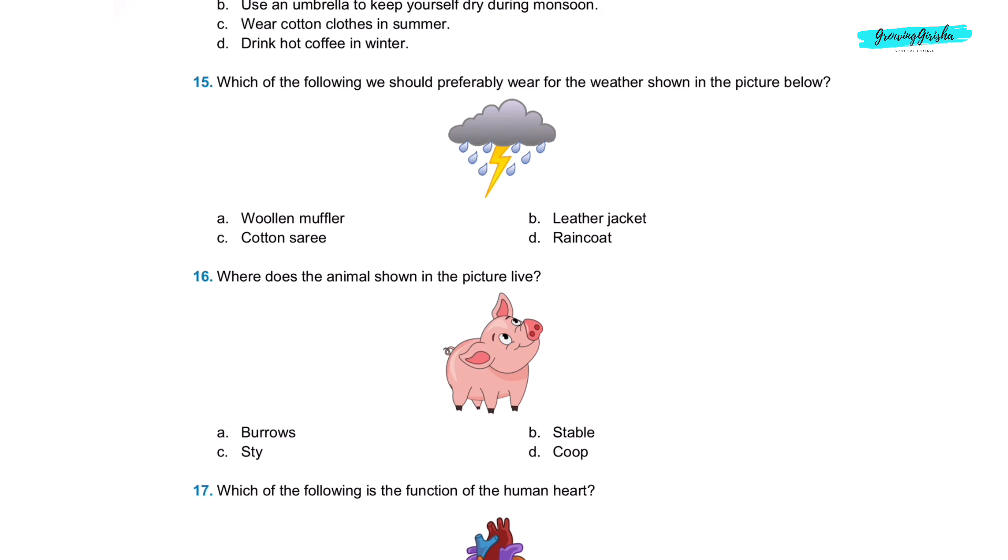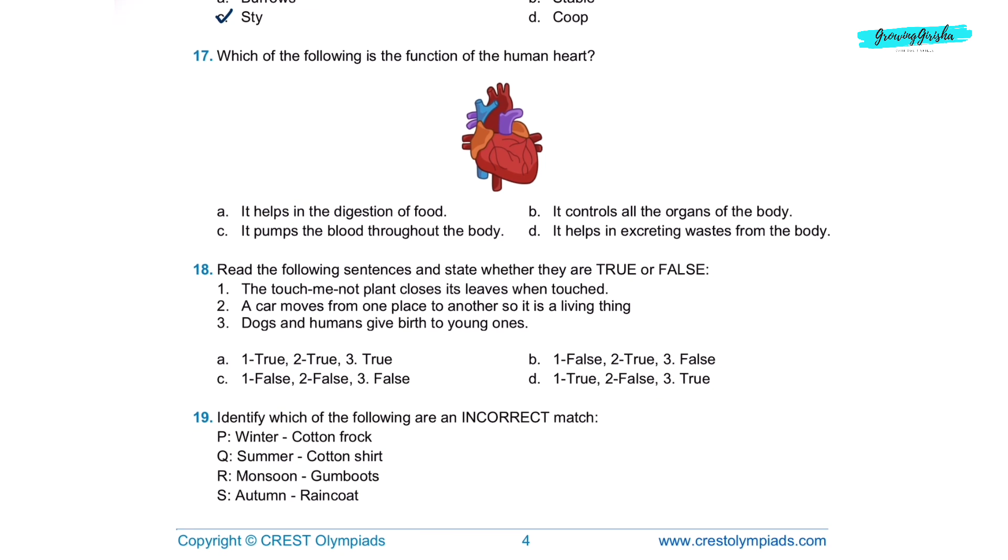Question 15. Which of the following we should preferably wear for the weather shown in the picture below? Option D, raincoat. Question 16. Where does the animal shown in the picture live? The given picture is of a pig and it lives in a sty. So option C is the correct answer. Question 17. Which of the following is the function of the human heart? Option C, it pumps the blood throughout the body.